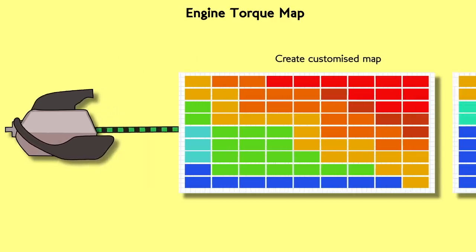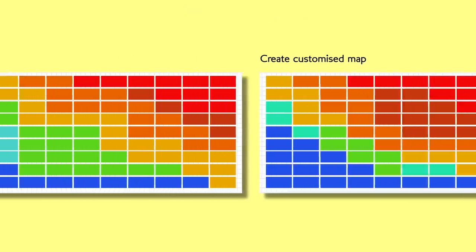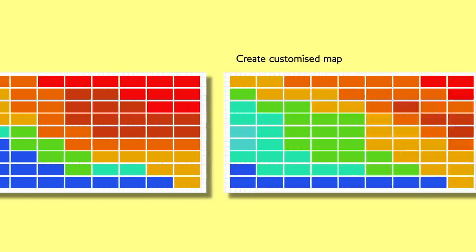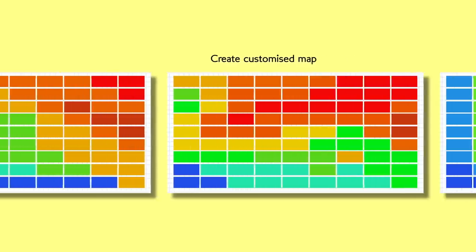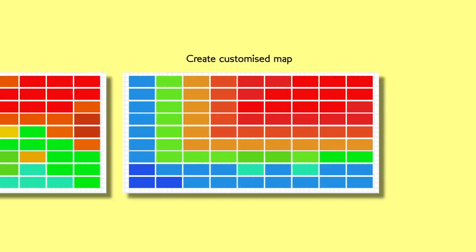This is where our custom various engine mappings come in. We can create our own versions of this map so that when a driver pushes the accelerator pedal at a certain engine speed, the torque outputted will be different under different maps.